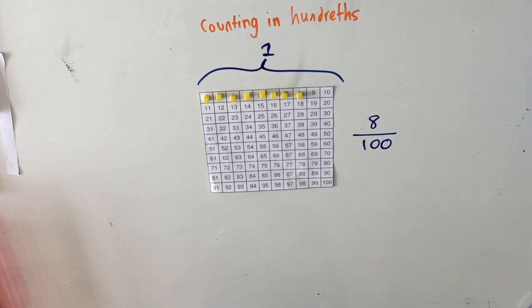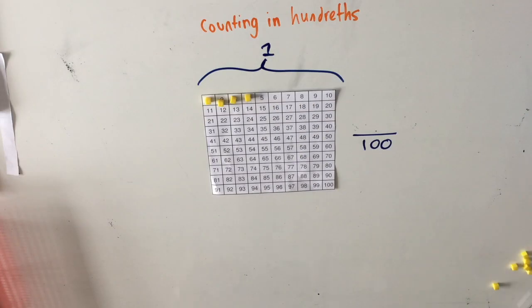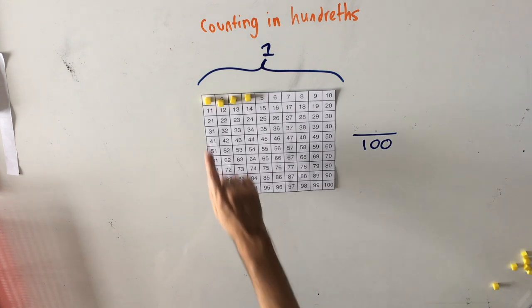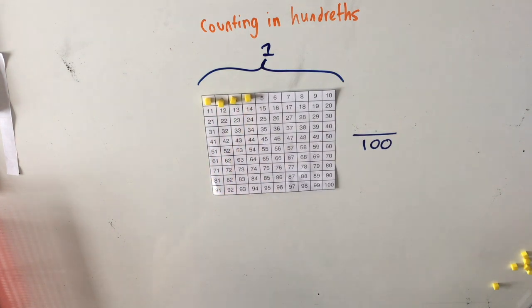Let me show you a different example. How many hundredths have I covered up here? You can see by counting one, two, three, four, that I've covered up four one hundredths.